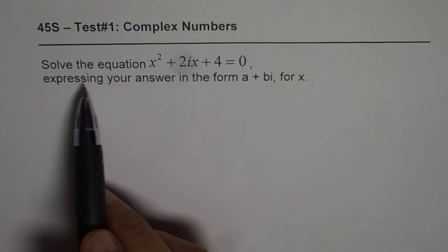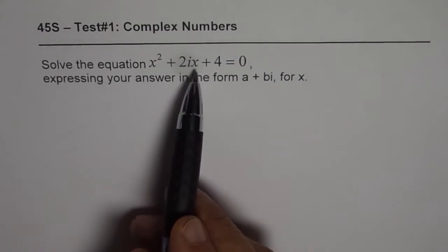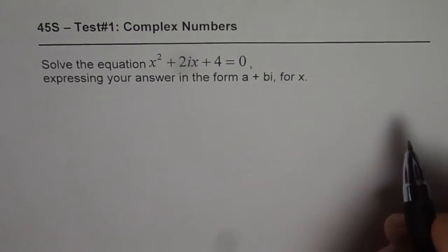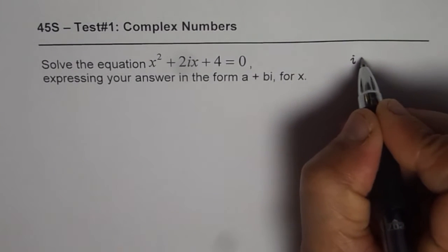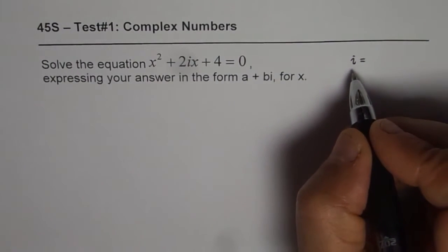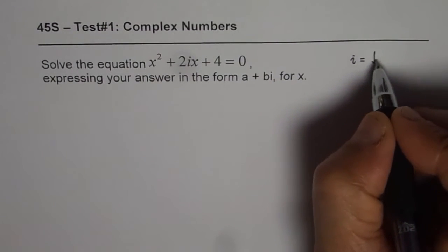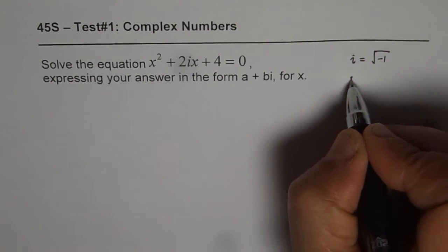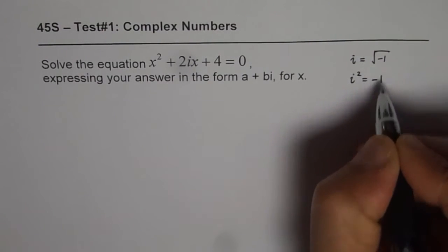The question here is, solve the equation x squared plus 2ix plus 4 equals 0. Remember, i is sometimes said as iota, the Greek symbol, is square root of minus 1, or i squared is minus 1.